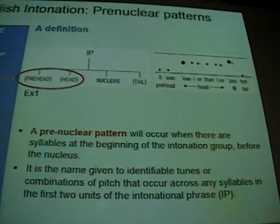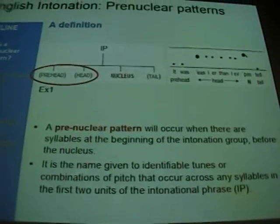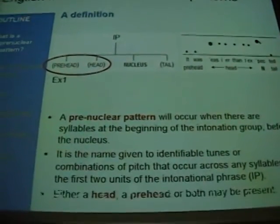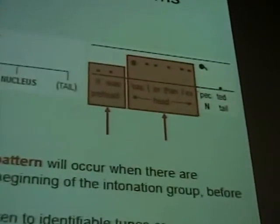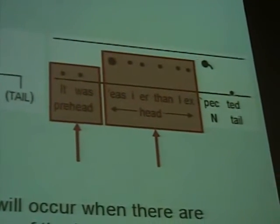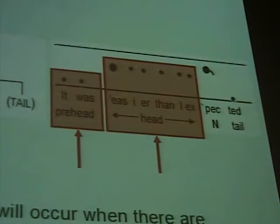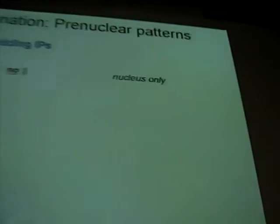Today we're looking at the first two units of the intonational phrase. We've already done the last two, so we're well on the way. If we've got a pre-nuclear pattern, either the head or the pre-head, or both, will be present. They both have brackets around them — they're both optional and don't have to co-occur. We'll see how this works by building a few intonational phrases, looking at the different permutations of the components.